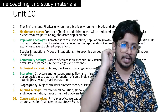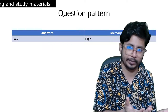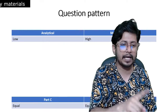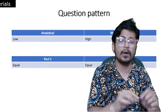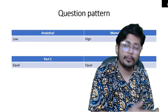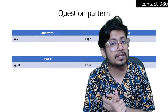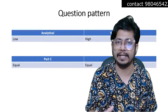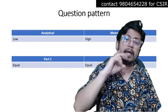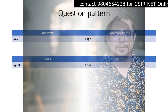Regarding the question pattern, Unit 10 has more memory-based questions than analytical ones. There are equal numbers of Part B and Part C questions from CSIR NET ecology and environmental biology. Even Part C questions in this unit require a fair share of memory-based answers — so even if you understand succession and life history tables clearly, there are things you always need to remember to answer Part C questions.